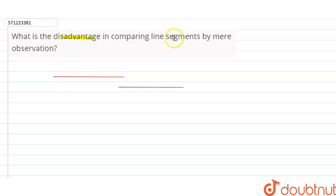is the disadvantage in comparing line segments by mere observation? So when we compare two line segments of almost equal length, we cannot be sure about the line segment - which one is greater or which one is smaller.